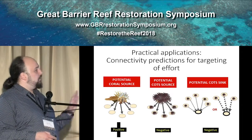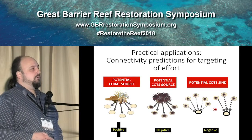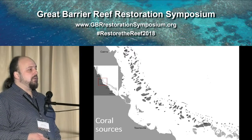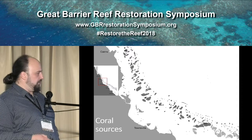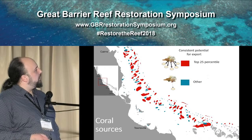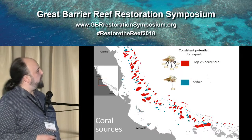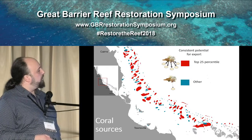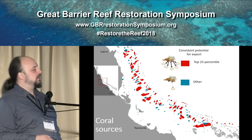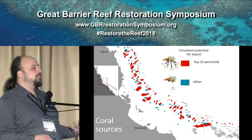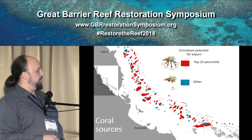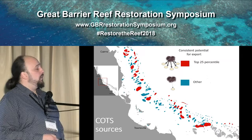We can then map these three categories onto a region, like the region between Cairns and Townsville, which is where most of the outbreaks are right now and where they continue to spread. We can look for reefs that are consistently good larval sources — the reefs shown in red are identified as very good sources, mostly large reefs. If you want to help promote regional recovery, these are the reefs you should be paying attention to, if you believe the models.